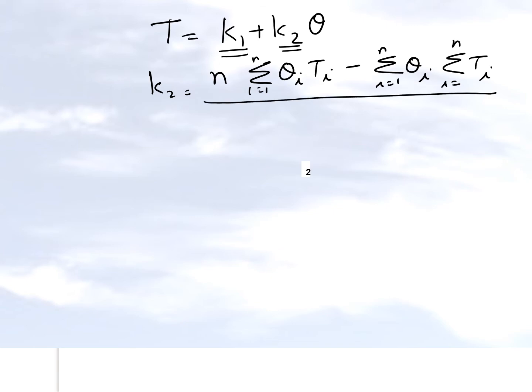To recap what we did in the derivation of the straight line regression model, we have torque equal to k1 which is the intercept and k2 which is the slope. And k2 will be given by the following formula here. So that's the numerator and now this one forms the denominator of the formula.